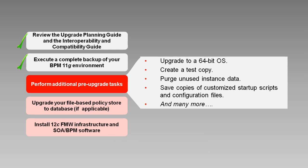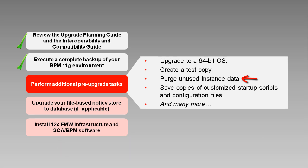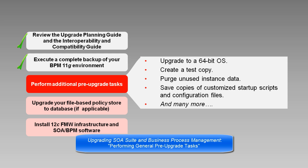To save time migrating 11G data to 12C, purge any instance data that you no longer need to retain. You can get information on purging scripts in the document listed here. It's a good idea to resolve faulted or suspended instances as well, to leave fewer loose ends. The upgrade will overwrite some startup scripts and configuration files, so if you have customized these, save off a copy before you upgrade so you can reapply those customizations after the upgrade is complete. These tasks and others are described in more detail in the Performing General Pre-Upgrade Tasks section of the Upgrading SOA Suite and Business Process Management Guide.